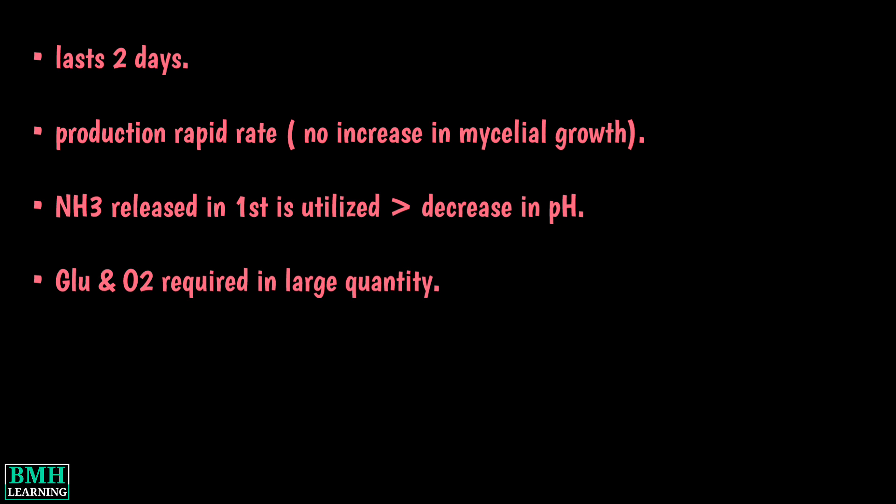In the second phase, which lasts for two days, streptomycin production takes place at a rapid rate without an increase in mycelial growth. The ammonia released in the first phase is utilized, which results in the decrease of pH to 7.6 to 8. Glucose and oxygen are required in large quantities during this phase.